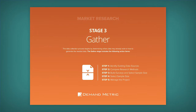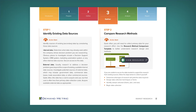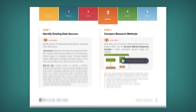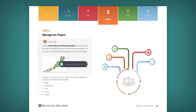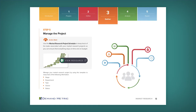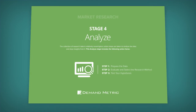In Stage 3, we focus on gathering. The first step is to identify your existing data sources, and then compare research methods. We move into building your market research surveys, selecting your sample size, and then managing the project.